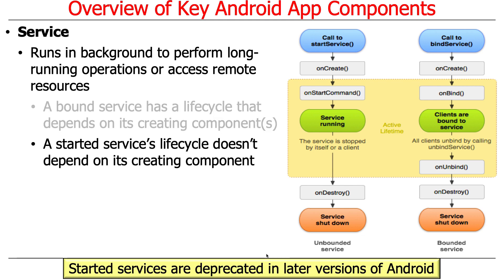There's also a started service or unbound service, which is just started and will keep running as long as nobody shuts it down explicitly. That's more flexible because you don't need anyone alive to keep it going, but it's also a battery sucker. As a result, later versions of Android have significantly deprecated and restricted what started services can do, and they've been phased out in favor of things called jobs and the job scheduler.